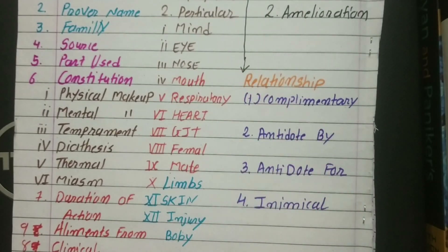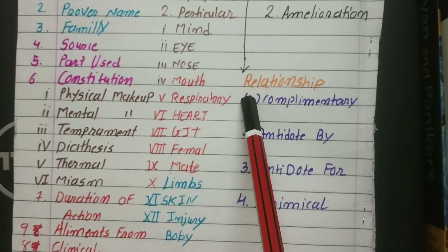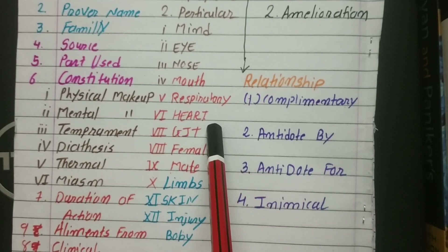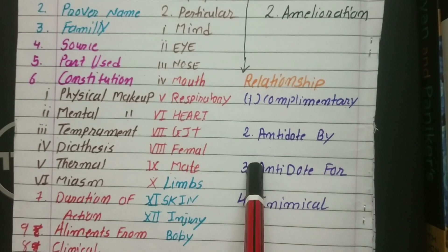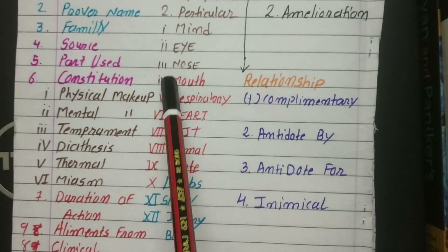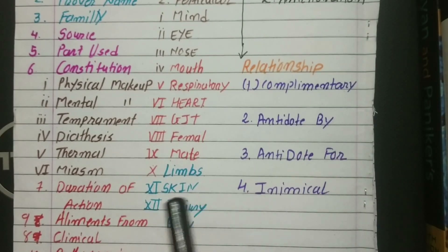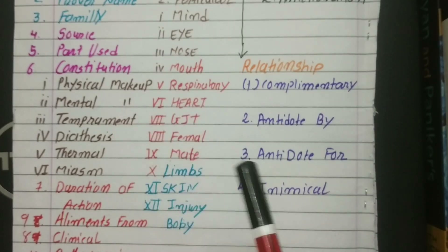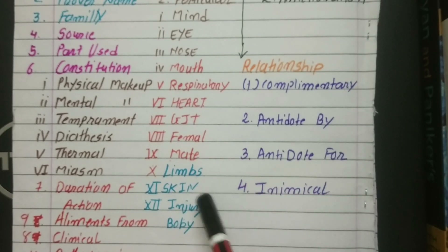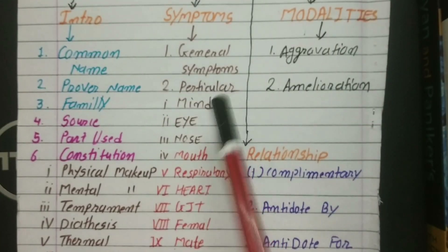Our polycrest remedies act on all systems of the body, while acute remedies act on particular systems. In particulars, we write from the top of the body to the bottom — starting with mind, then eyes, then nose, then mouth, then ears. Then we go to the thoracic cavity covering the respiratory system, then the heart, then the abdomen, then GIT, then female and male complaints, then the limbs, and then skin.